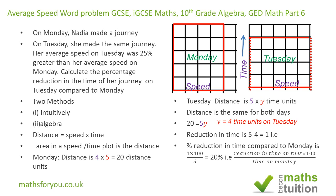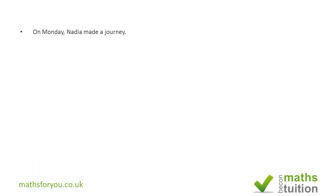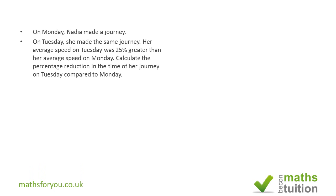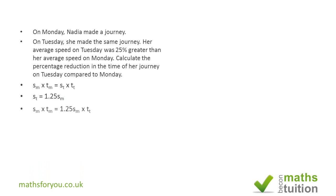Now for the algebraic method. The distance on Monday equals speed on Monday times time on Monday, and this equals the distance on Tuesday, which is speed on Tuesday times time on Tuesday. Since Tuesday's speed has gone up by 25%, we can say the speed on Tuesday equals 1.25 times the speed on Monday.